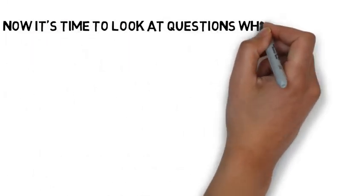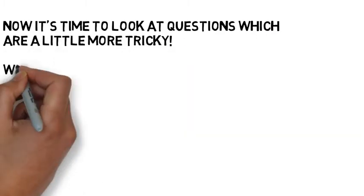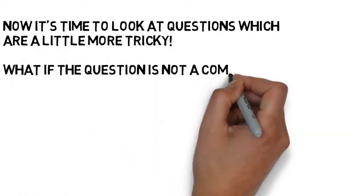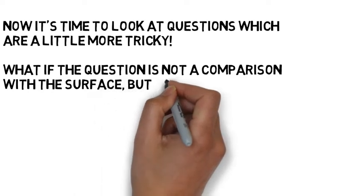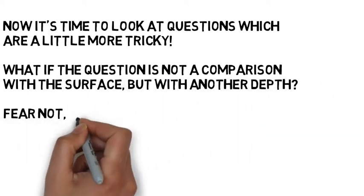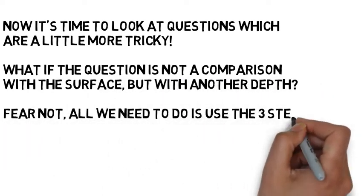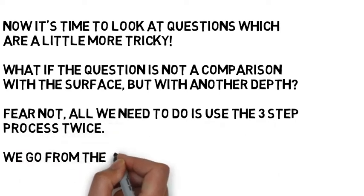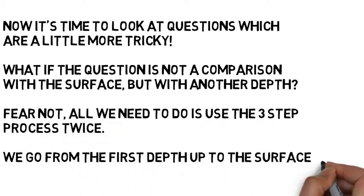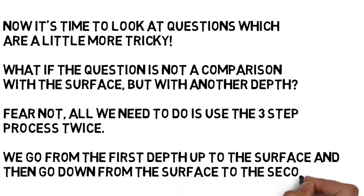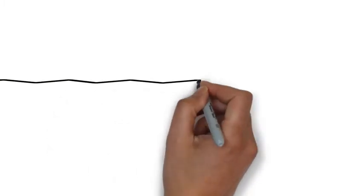So now we're moving on to looking at questions that are a little bit more tricky. What if the question is not a comparison with the surface, but with another depth? Well fear not, all we need to do is use the three-step process twice. We go from the first depth up to the surface, and then we go from the surface down to the second depth. It's a pretty easy thing to do. But before we do that, let's just review what you know.